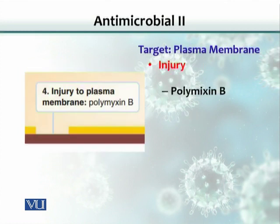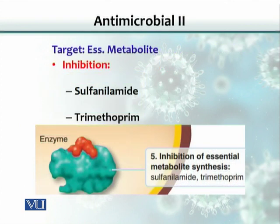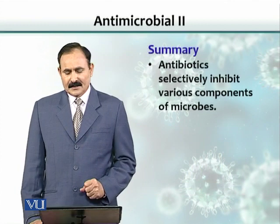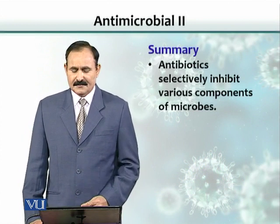The plasma membrane is another target — polymyxin B causes injury to the plasma membrane, and if the plasma membrane is injured, essential components of the cell leak out, leaving the cell deficient and causing cell death. Essential metabolites can also be inhibited: sulfonamides combined with trimethoprim inhibit an enzyme that makes PABA, which is needed to make folic acid. Folic acid is needed to make purines and pyrimidines, which are essential ingredients of DNA. In summary, antibiotics selectively inhibit various components of microbes.